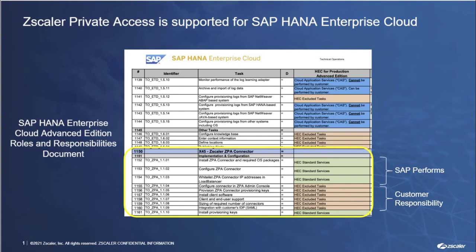Zscaler is an official SAP partner and offers a highly complementary cloud security solution for SAP ERP deployments. The Zscaler Private Access Service is supported for use with HANA Enterprise Cloud, as listed on the Advanced Edition Roles and Responsibilities document available via the SAP website. This demo will cover all of the primary setup and configuration steps required for ZPA with SAP HANA. Note that subscribers to the HANA Cloud offering will only need to perform a subset of these tasks.